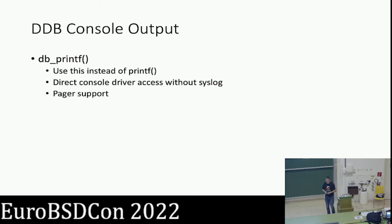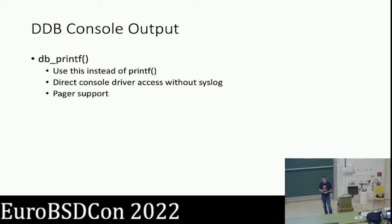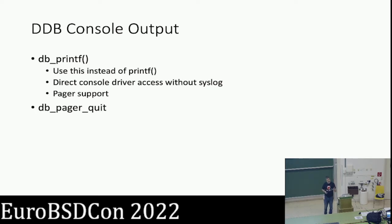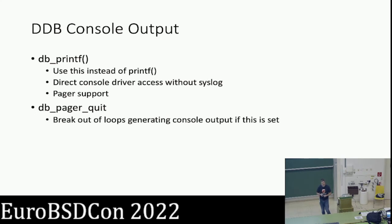One feature db_printf has is a built-in notion of a pager. When you are printing output to DDB, it traps newlines and keeps count of how many it's done, and based on that, drives simple logic around a pager to avoid spamming the system console. It has built-in logic for single spacing or a page at a time, and also a way to quit and abort a command — when that happens, it sets a global variable db_pager_quit. If you're writing a command that loops, you should check this variable and break out of any loop if it has been set.